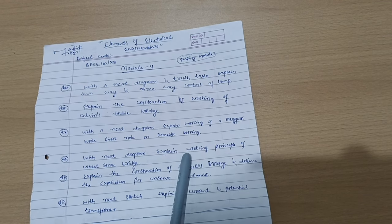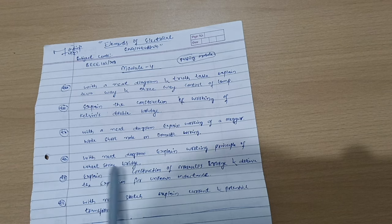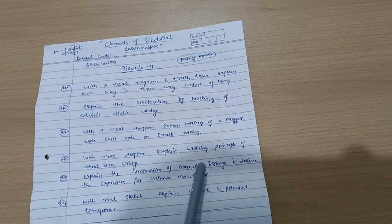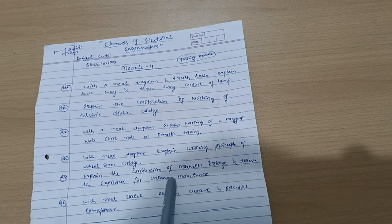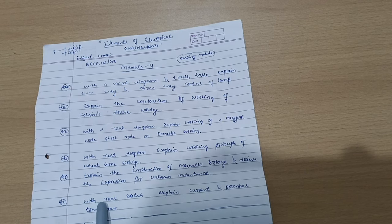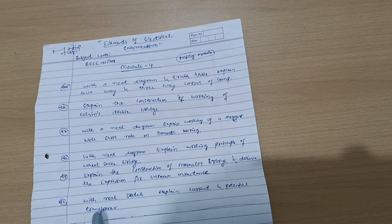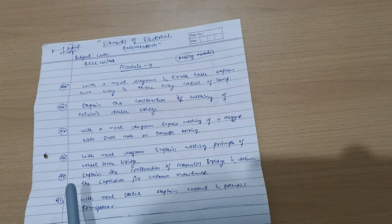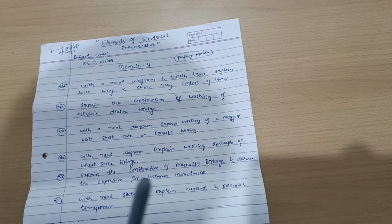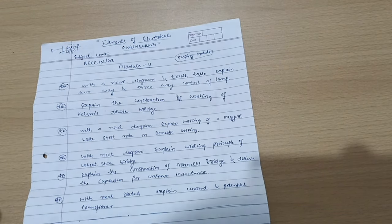And with neat diagram, explain working principle of Wheatstone bridge. Explain the construction of Maxwell's bridge and derive the expression for unknown inductance. And with neat sketch, explain current and potential transformer. These six questions are enough to cover Module 4. That is why I call it the passing module.